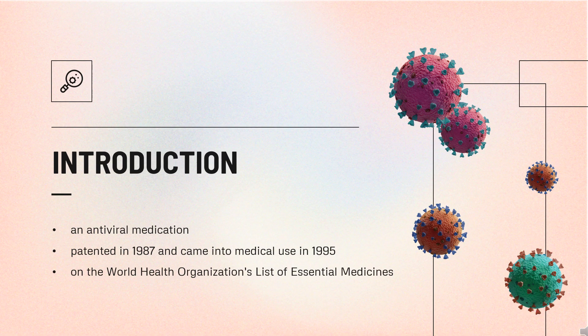Common effects include headache and vomiting. Valaciclovir was patented in 1987 and came into medical use in 1995. It is on the World Health Organization's list of essential medicines and is available as a generic medication. In 2020, it was the 119th most commonly prescribed medication in the United States, with more than 5 million prescriptions.